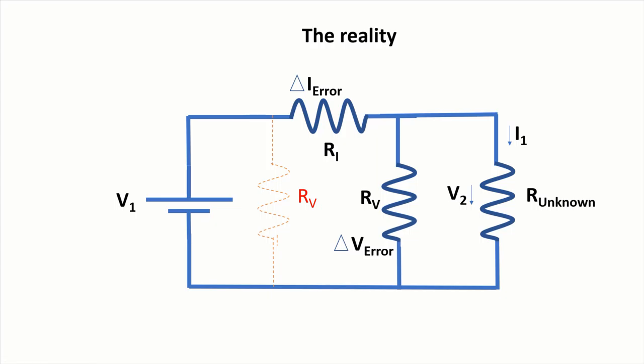So what happens is that the current meter actually has internal resistance, and it has a certain error in the current measurement.